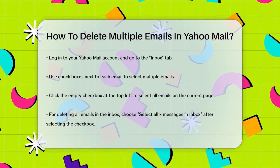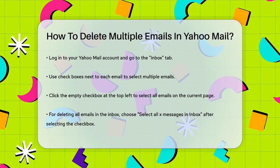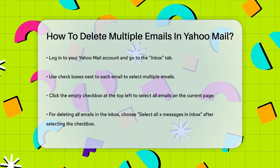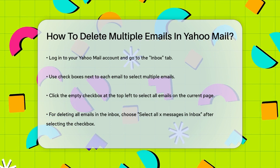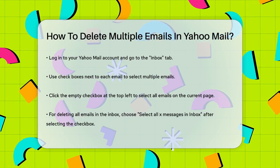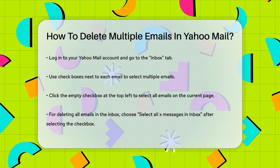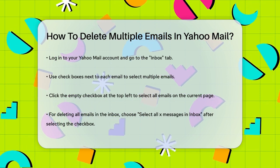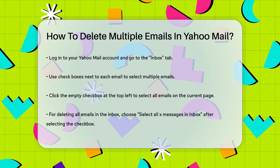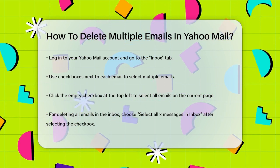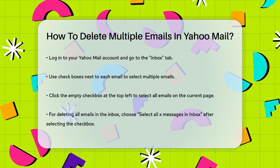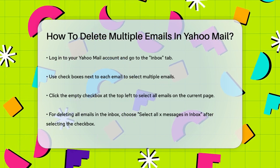First, log in to your Yahoo Mail account and navigate to the Inbox tab. To select multiple emails, you can use the checkboxes next to each email. If you want to select all the emails on the current page, click the empty checkbox at the top left corner of the email list. This will checkmark all the conversations on that page.